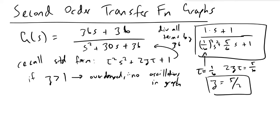Another takeaway is that because tau equals one sixth, after one sixth seconds — or whatever units of time we're using — we would expect to be 63% of the way towards the new equilibrium value.